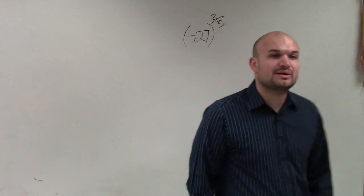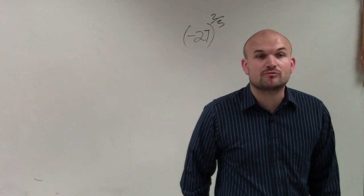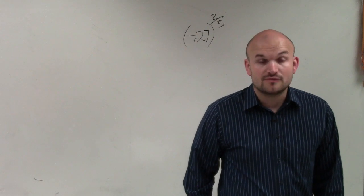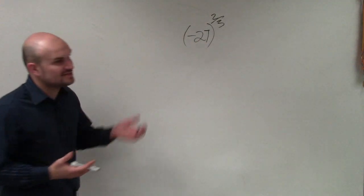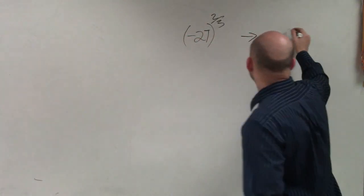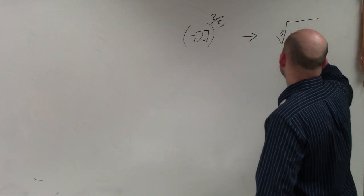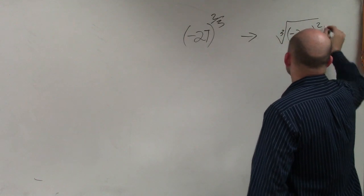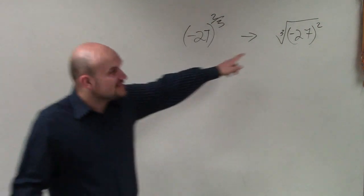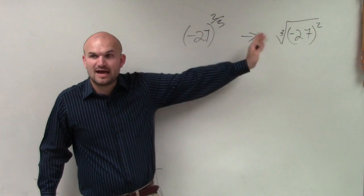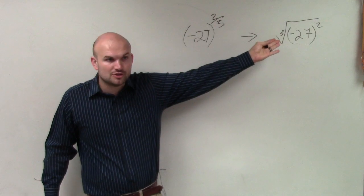So when you're doing a problem like this, the main important thing is to first rewrite this as a radical expression. So you could say, well, then this is the cube root of negative 27 squared. So if you have a calculator and you're having trouble with this, then simply square negative 27 and then simplify by taking the cube root.